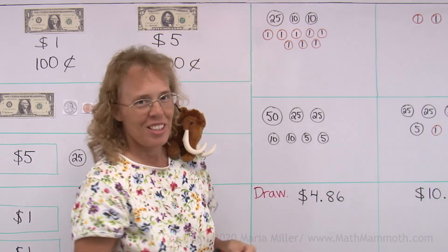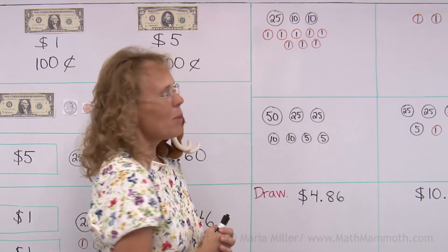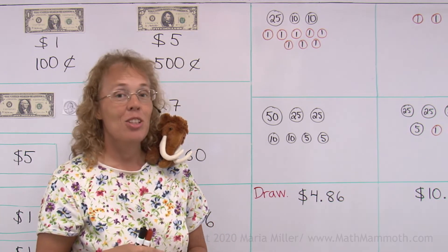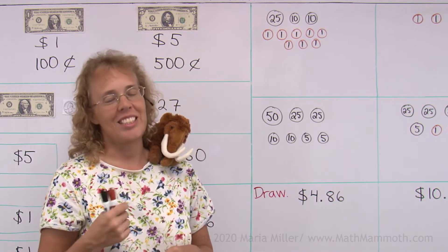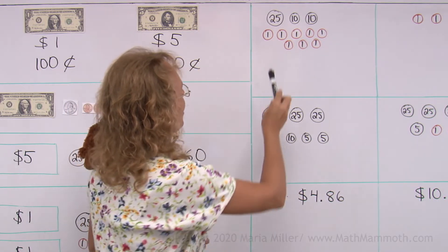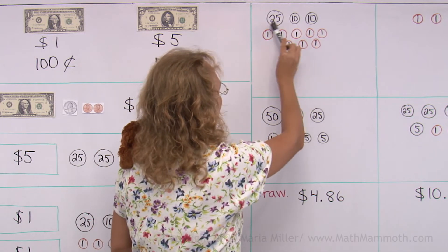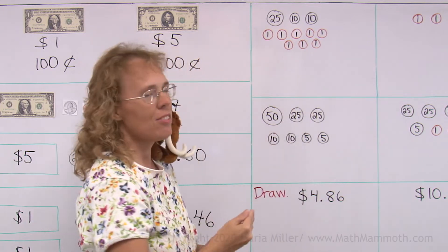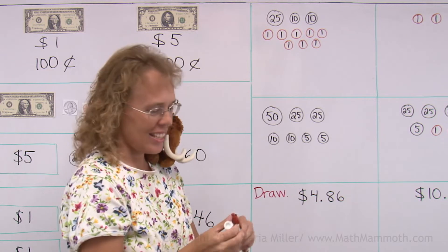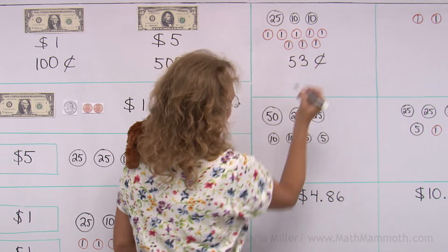Over here I don't have any dollars, any dollar bills. I just have coins. But we are going to now write this amount, the money amount, in two different ways, using the dollar symbol and using the cent symbol. But let's first count how many cents do we have. Twenty-five, thirty-five, forty-five, then there's five pennies. Forty-five and five pennies makes fifty and then three more, so fifty-three cents.